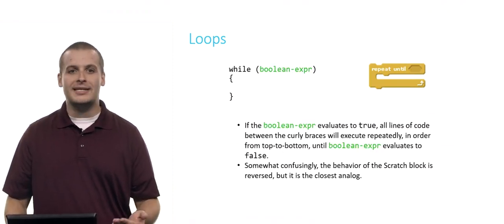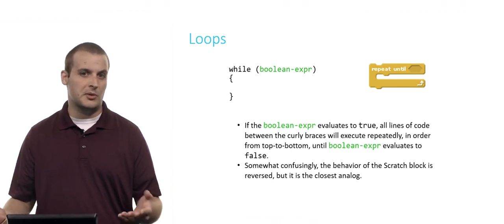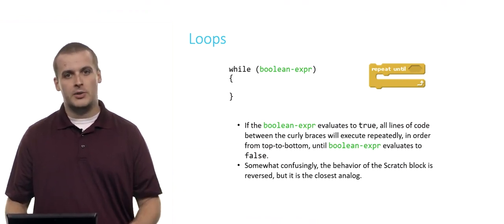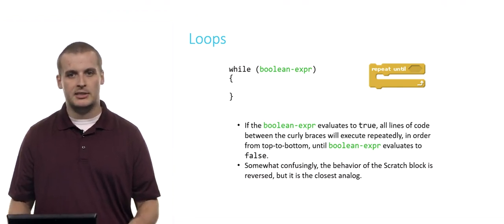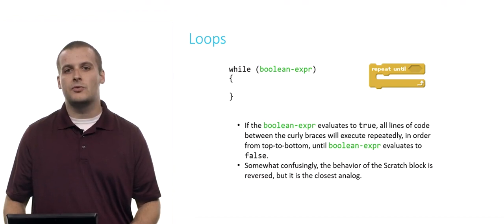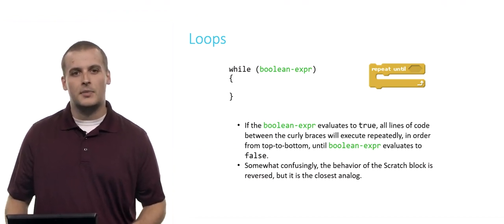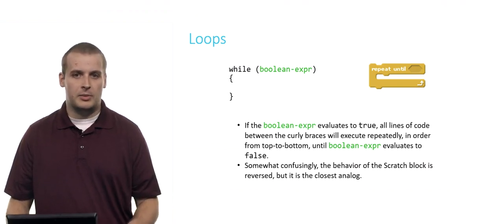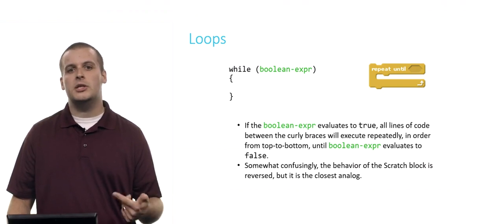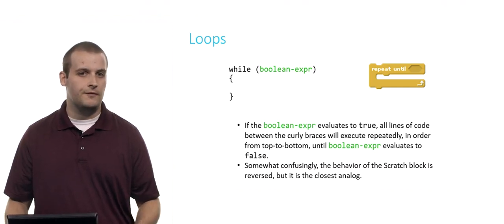Now, while loops are not always infinite. We can also replace the Boolean expression with something a little more useful than just true. So here's another example: while, and then some Boolean expression, and then curly braces. That's pretty much analogous to repeat until from Scratch, although in a second I'll explain the difference. In C, if the Boolean expression inside of the while loop evaluates to true, the lines of code between the curly braces will execute repeatedly, over and over and over, until the Boolean expression evaluates to false.